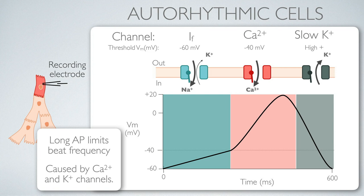The auto-rhythmic cells provide a safety measure against exhaustion by serving as an upper limit to the beat frequency that is possible. The contractile cells themselves have safety measures as well. For that, we're going to compare the behavior of a myocardial contractile cell to skeletal muscle fibers.